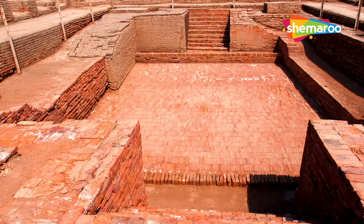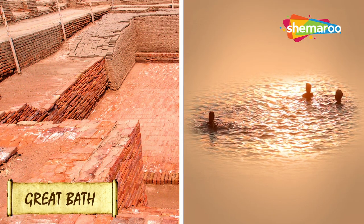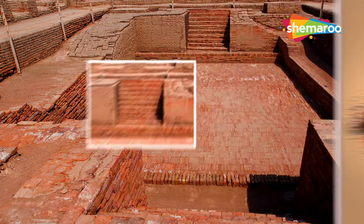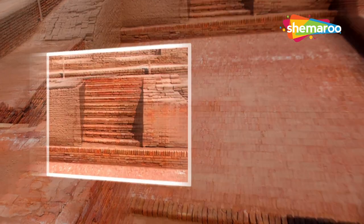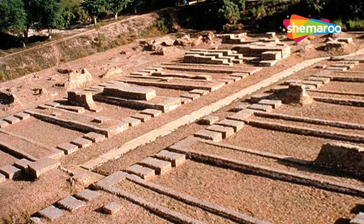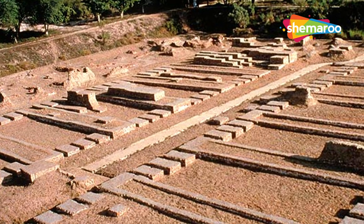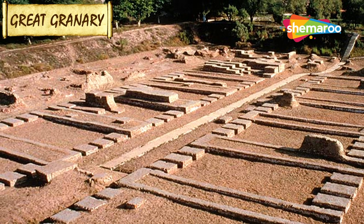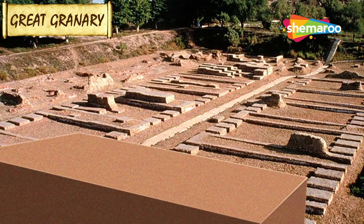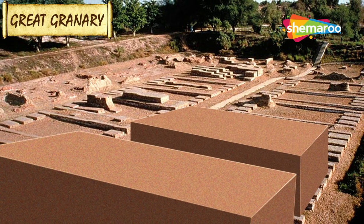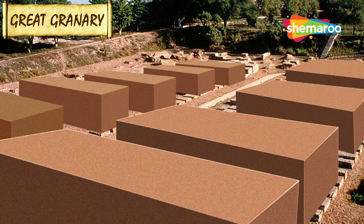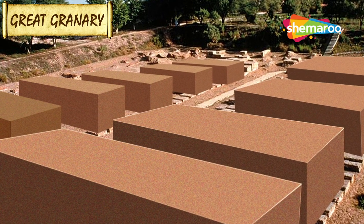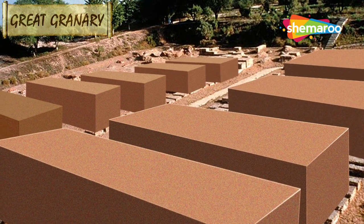The citadel also has the Great Bath, used for bathing purposes by the rulers, with steps leading down on both sides. Next to the Great Bath was a large building known as the Great Granary. Certain wall divisions in its massive wooden superstructure appear to be grain storage bays, complete with air ducts to dry the grain.